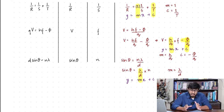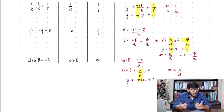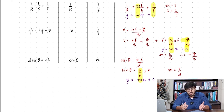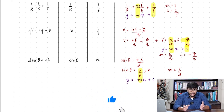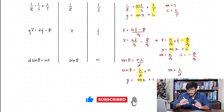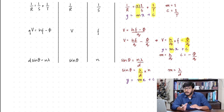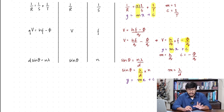The basic idea of this entire exercise is: whenever you have to compare an equation with y equals mx plus c, observe which quantity is on the y-axis and which is on the x-axis — the examiner will tell you either through a statement or a graph. The first step is to separate the quantities: place the y-axis quantity on the left-hand side and the x-axis quantity on the right, isolated from all other variables, so you can clearly find the gradient and y-intercept. I hope this lecture was useful and this skill will be really helpful throughout your A-levels. Take care.